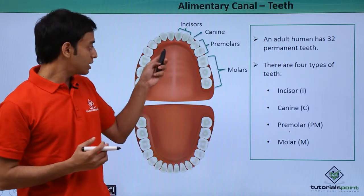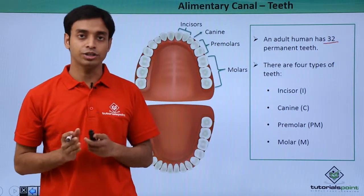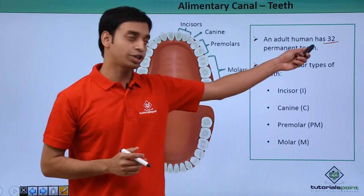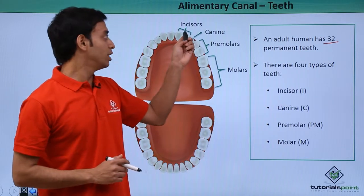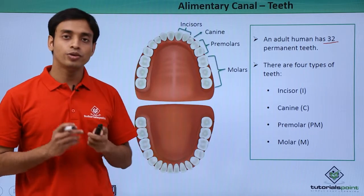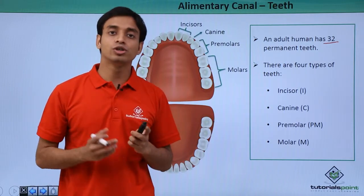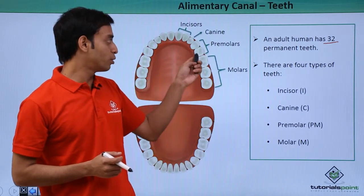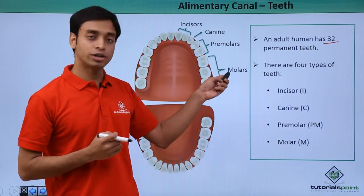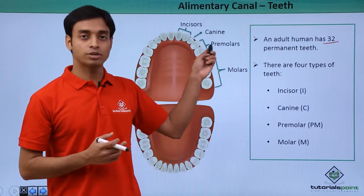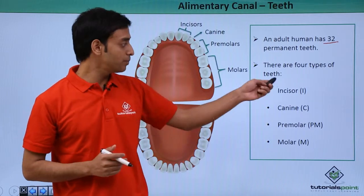Looking at the buccal cavity, this is the upper jaw and this is the lower jaw. A typical adult human being has 32 permanent teeth. There are four types of teeth: the first type is the incisor — there are two incisors used for cutting. This is followed by the canines, which are very sharp-edged teeth used for tearing flesh. Next are the premolars, which break down hard food materials into smaller particles, followed by the molars, which grind hard substances into very small particles.